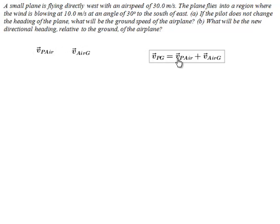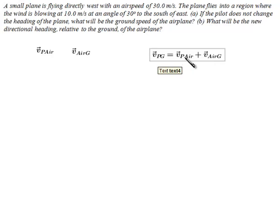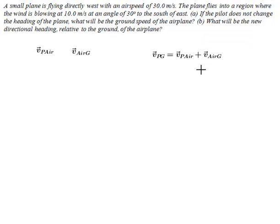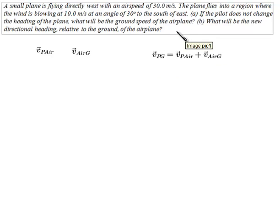Make the connection: this is like the velocity of the man relative to the floor being equal to the velocity of the man relative to the walkway plus the velocity of the walkway relative to the floor. In this particular problem, they do not ask you explicitly for the velocity of the plane relative to the ground, but you need to recognize that that is what is being asked for. They ask for the ground speed — interpret that as the speed relative to the ground — and they ask for the directional heading relative to the ground. Being asked for both speed and direction relative to the ground is tantamount to being asked for the velocity relative to the ground.